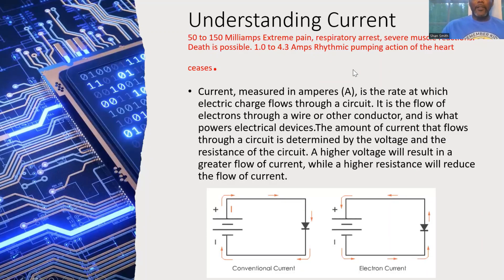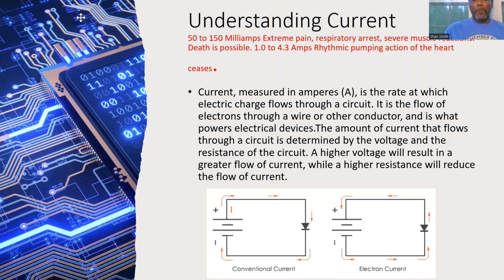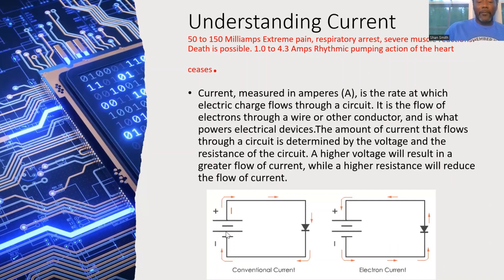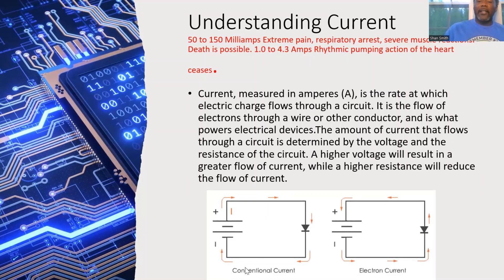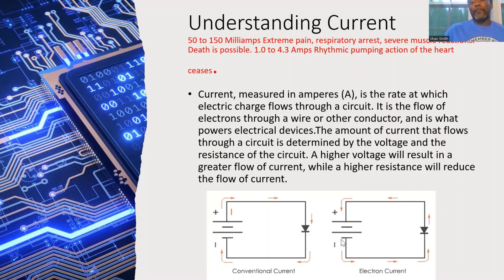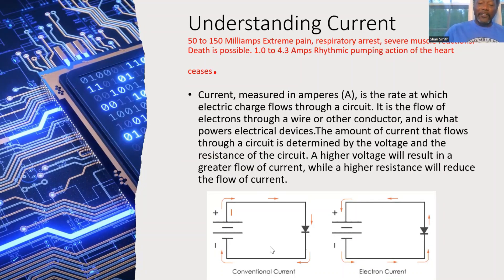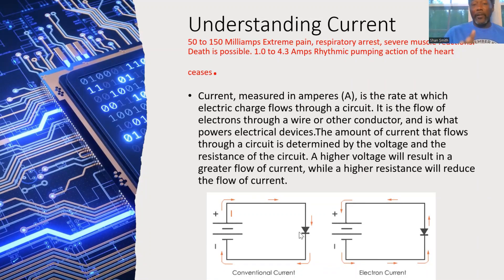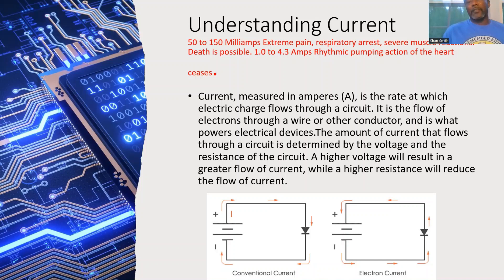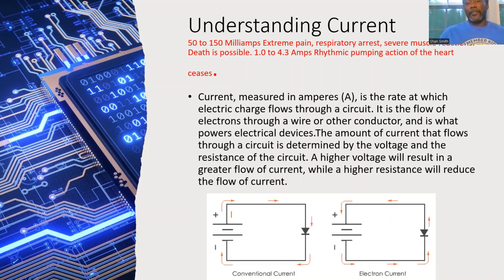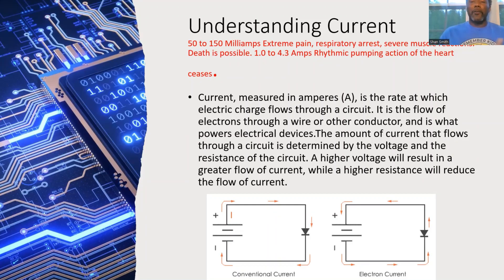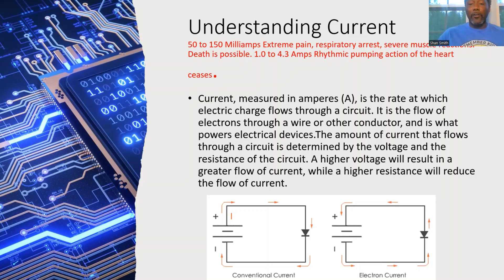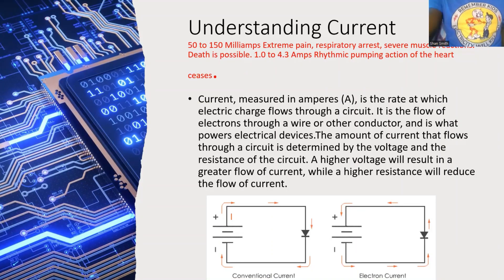Current is the flow of electrons. There are two theories: conventional current flow, where electrons flow from positive to negative; and electron flow theory, where current flows from negative to positive. A diode only allows current to flow in one direction. Importantly, current flow is the dangerous part of an electrical circuit — current always takes the path of least resistance, which means it could flow through your body. Electricity will kill you.